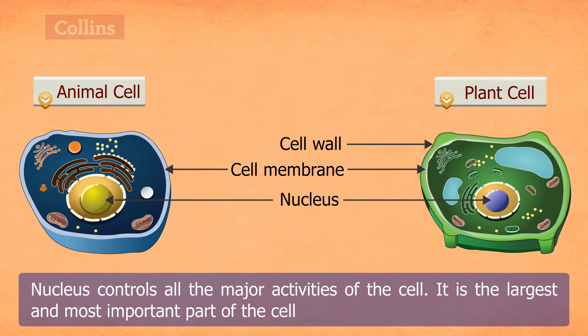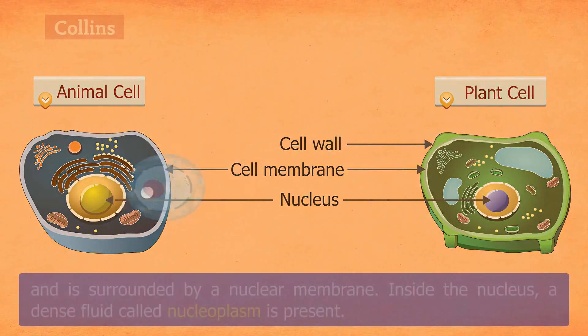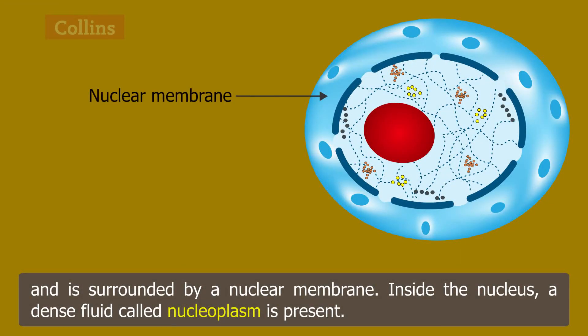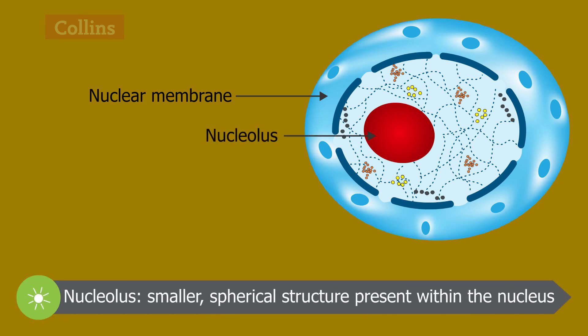Nucleus is called the brain of the cell as it controls all the major activities of the cell. It is the largest and most important part of the cell and is surrounded by a nuclear membrane. Inside the nucleus, a dense fluid called nucleoplasm is present. The smaller, spherical structure present within the nucleus is called the nucleolus.